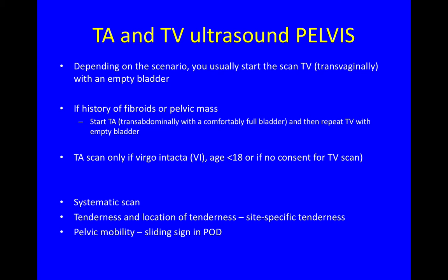Next, we'll do the scan. It's a scan of the pelvis, which you can do transabdominally and/or transvaginally. Depending on the scenario, you usually start the scan transvaginally with an empty bladder. But if there's a history of fibroids or pelvic mass, you might start transabdominally with a comfortably full bladder, and then repeat the scan transvaginally with an empty bladder.